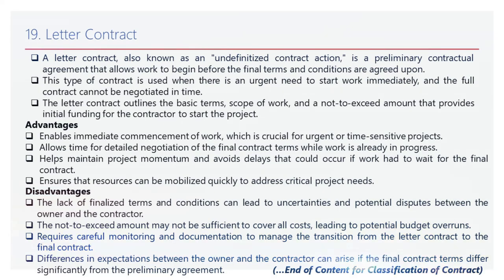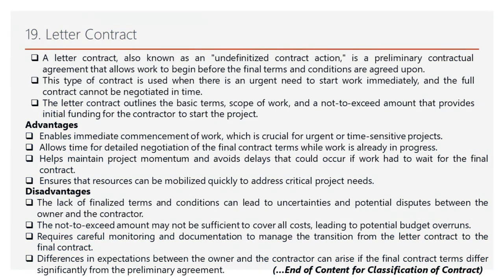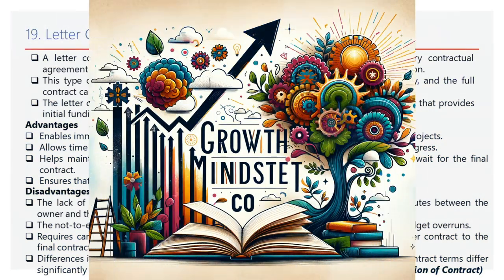Disadvantages of the letter contract: uncertainty in terms — the lack of finalized terms can lead to uncertainties and potential disputes as the project progresses. Budget limitations: the not-to-exceed amount may not be sufficient to cover all costs, leading to potential budget overruns. Ongoing monitoring needed: requires careful monitoring and documentation to manage the transition from the letter contract to the final contract. Misalignment in expectations: differences in expectations can arise if the final contract terms differ significantly from the preliminary agreement.